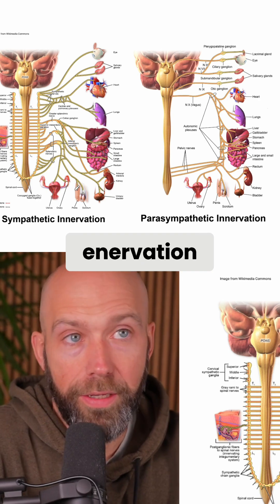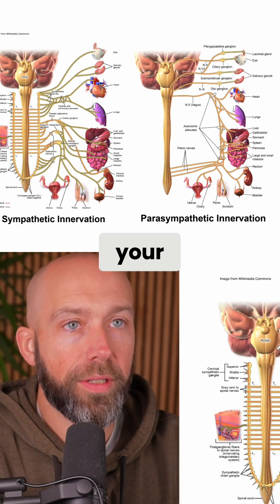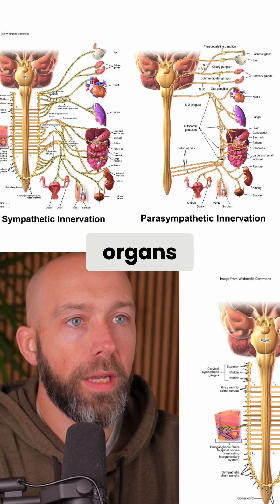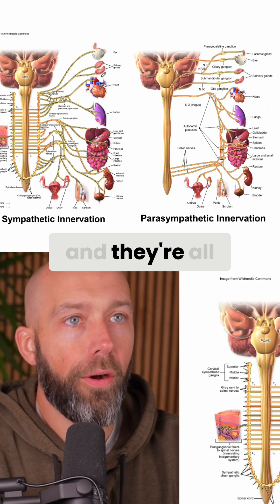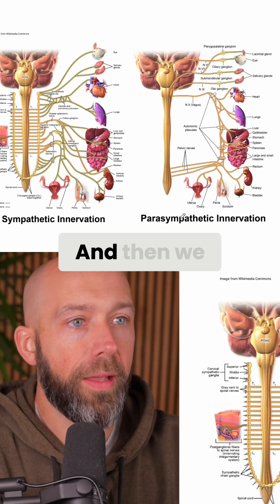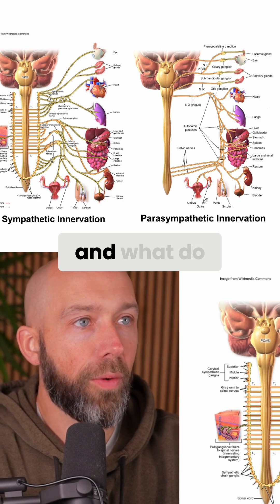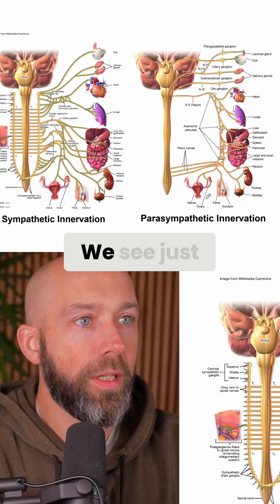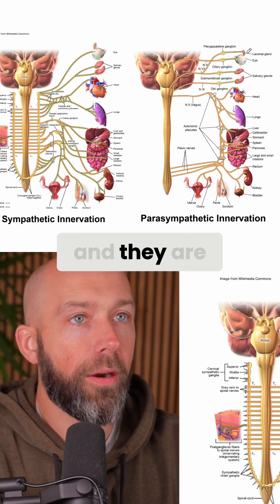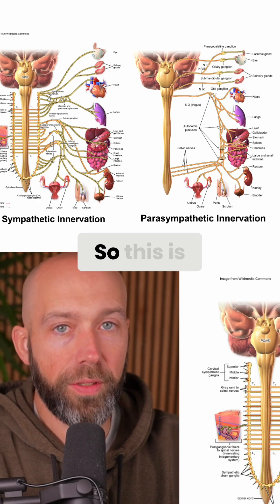This is called an innervation chart. You have your sympathetic innervation and you see all of these wonderful organs — they are all innervated by the sympathetic nervous system. And then we see the parasympathetic nervous system, and just about all of the same organs are also innervated by the parasympathetic nervous system.